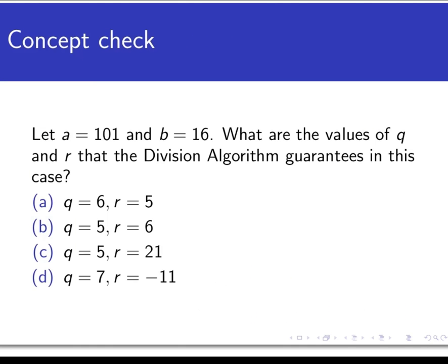So let's see how well you're understanding the statement of the division algorithm with an example. In the statement of the division algorithm, let's suppose that A is 101 and B is 16. What are the values of Q and R that the division algorithm guarantees in this case? Now here are your choices, and take a look at it and pause the video.